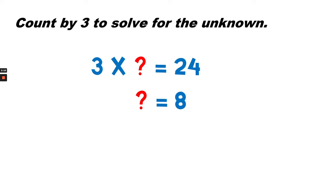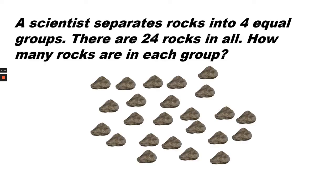3 times an unknown equals 24, and the unknown equals 8. 3 times an unknown equals 24.